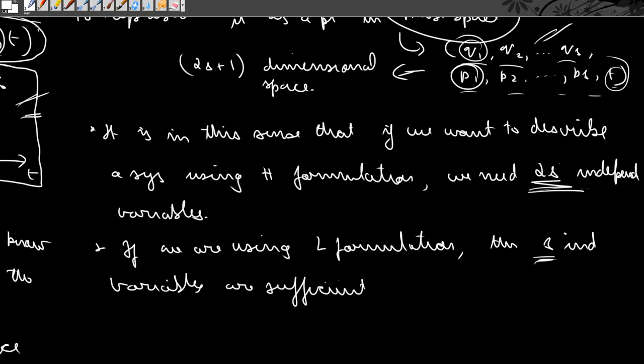I hope you have understood the difference between phase space and configuration space, when they are used, and how we can represent the path and get the value of the Hamiltonian and Lagrangian from their corresponding spaces. That's it for this video — thank you for watching, see you next time.